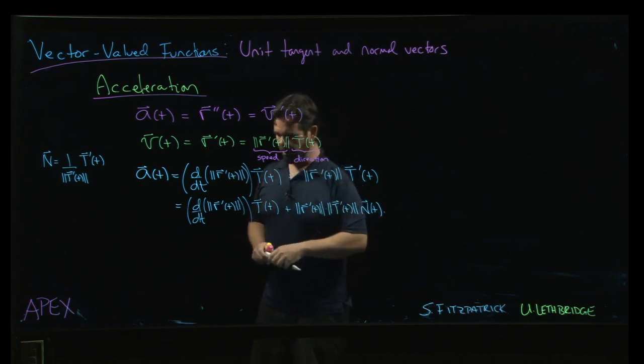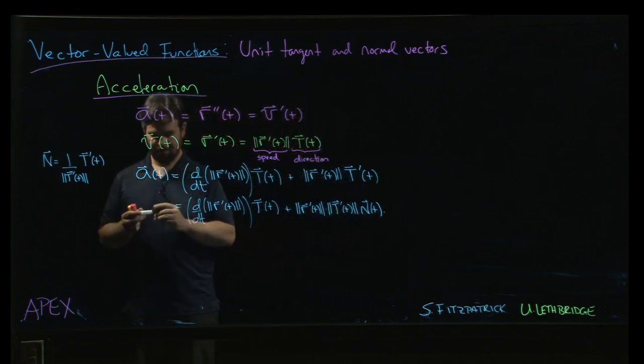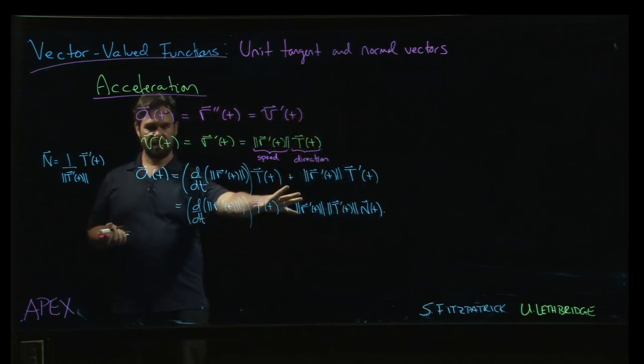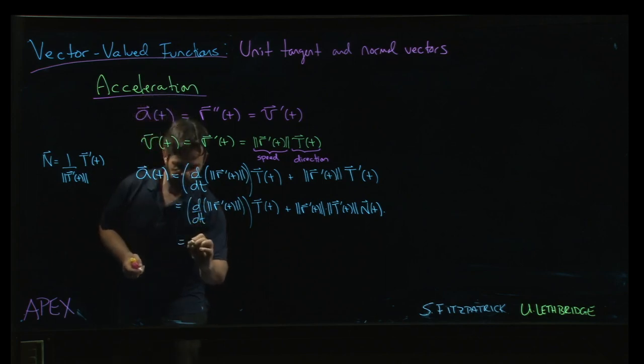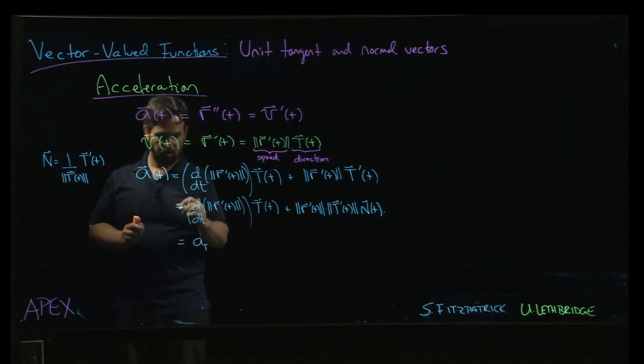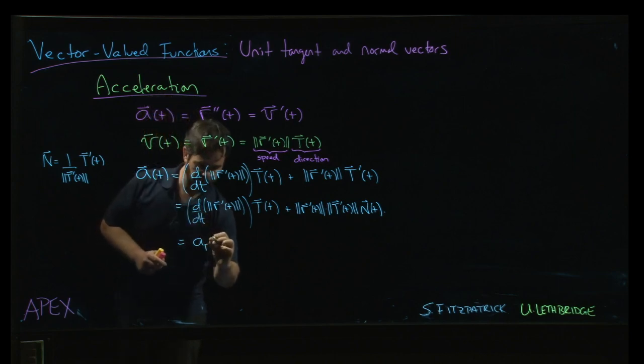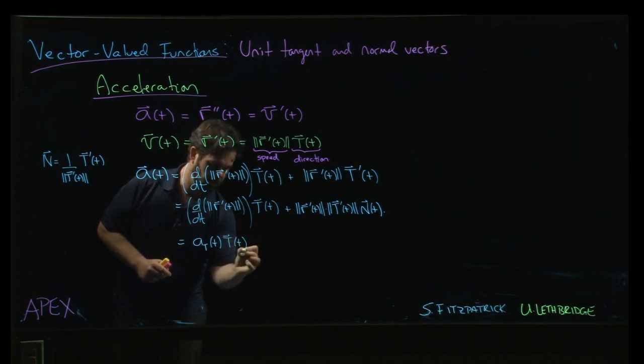And we'll see, there are probably some other ways we can adjust this. Well, in the next video we'll look to see if we can clean this up a little bit and write it a bit cleaner. But what you get is, you get something that looks like this. You get a scalar quantity a_t, sort of the tangential component of the acceleration, times the unit tangent vector.